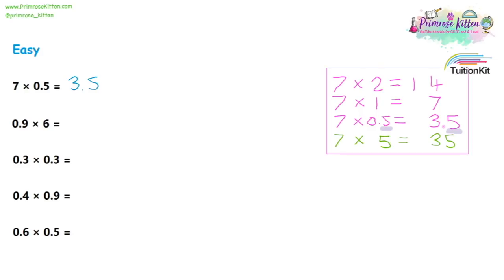So we already have the answer to our first question: 3.5. Now the next one — nine times six is 54, and because we have a decimal in the question, we put a decimal in the answer as well. Moving on to 0.3 times 0.3: first we do three times three. Because both parts of the question have a decimal, there are two decimals in the question, so we put two decimals in the answer, giving us 0.09.